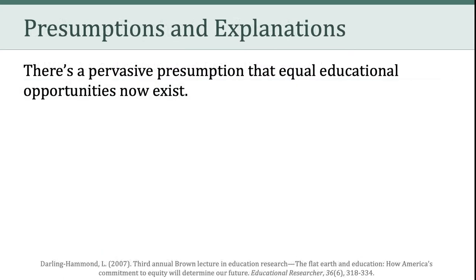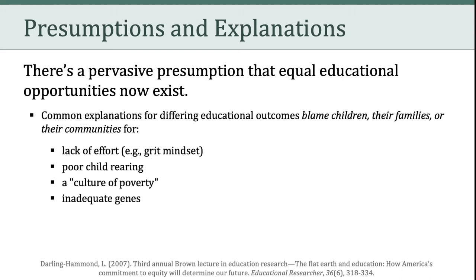What are the presumptions and explanations often used to explain these results? Darling Hammond argues there's a pervasive presumption that equal educational opportunities now exist. She explains that common explanations for differing educational outcomes blame children, their families, or their communities — for a lack of effort, poor child rearing, a culture of poverty, and inadequate genes. Those are some of the different reasons that have been used to explain these differing educational outcomes.